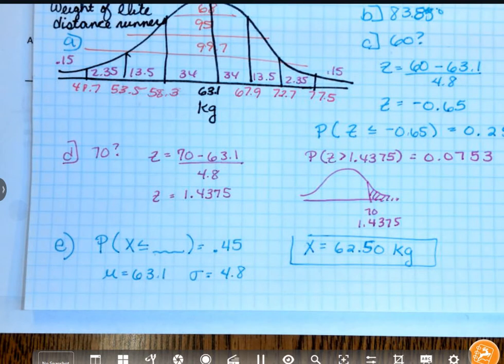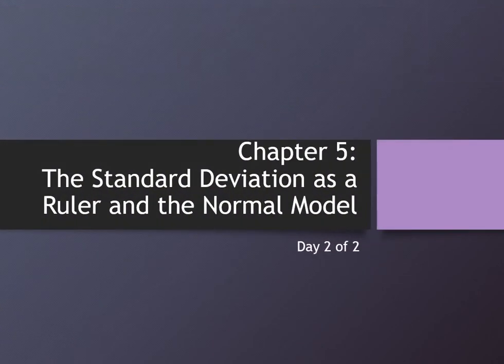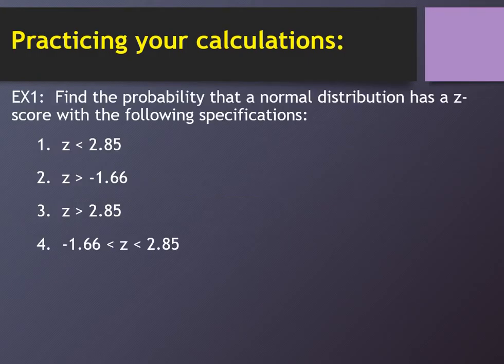That right there is the extent of what we're practicing today. Those few calculator buttons. All right. So hopefully you guys, like I said, again, watch the video because it gave you step-by-step calculator instructions. Now I just want to kind of go over and make sure that you've got those instructions. So what I want you to do first, very simply, I'm giving you a Z score. If you really want to use your table, okay. Don't use your table. That's horrible. I want you to find the probability that we have a Z score that's less than 2.85, greater than negative 1.66, greater than 2.85, and then between. So use your calculators to calculate that.